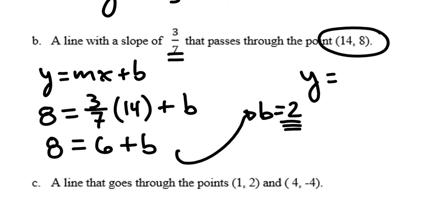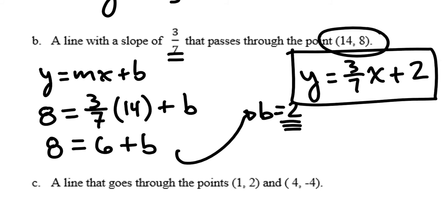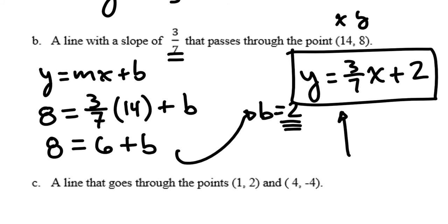Now I have my slope and my y-intercept, so I can write the equation of this line: y equals 3 sevenths x plus 2. This is the equation of a line that goes through the point (14, 8) and has a slope of 3 sevenths. If I take that x and y value and plug it into the equation, it will make the statement true — the left and right-hand sides will be equal because point (14, 8) lies on that line.